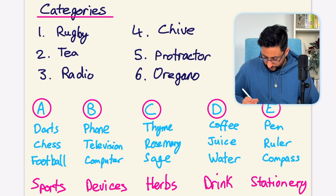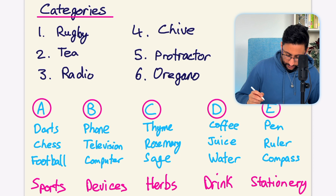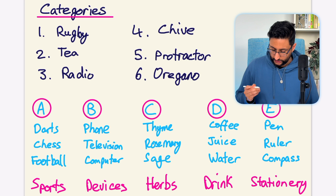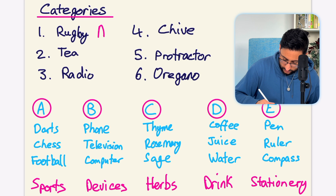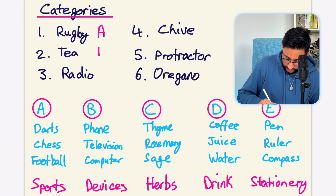Now that we've identified the categories of each of these groups, we can look at our questions. We have six example questions. Number one, we have rugby. Is rugby a type of sport, a device, a herb, a drink, or stationery? Fairly obviously we can say that rugby is a sport — that's A. Question two, again fairly straightforward: tea. That can only belong to D, the drinks category.